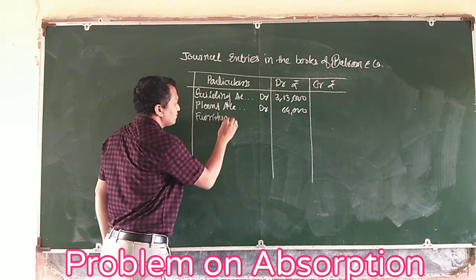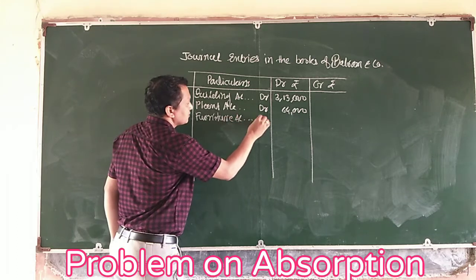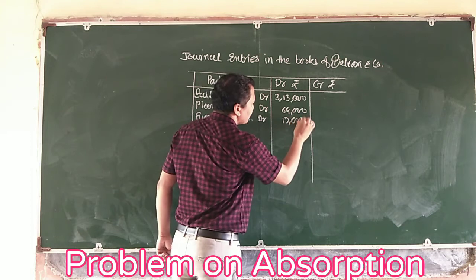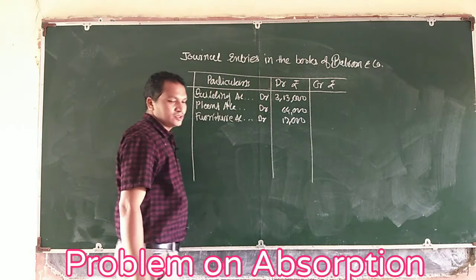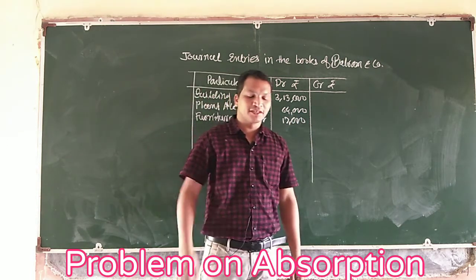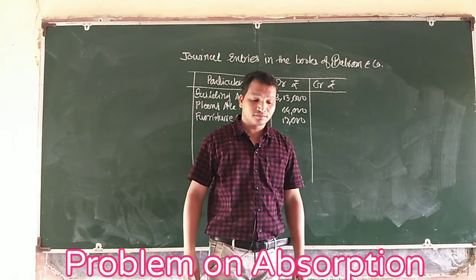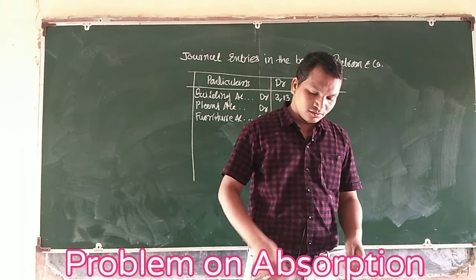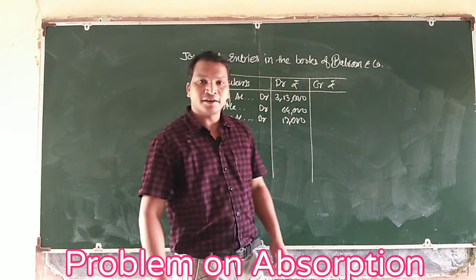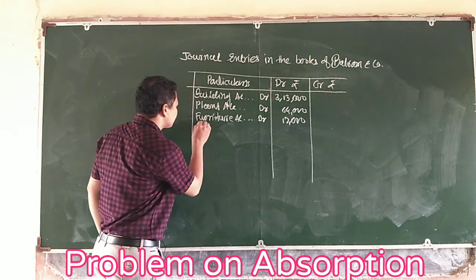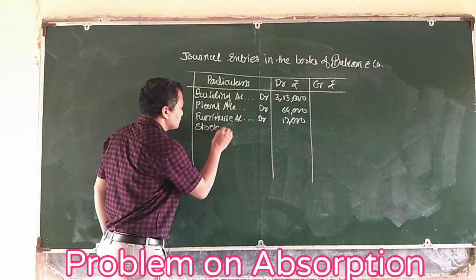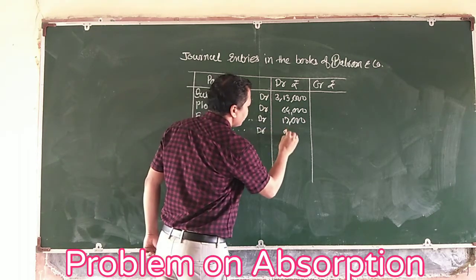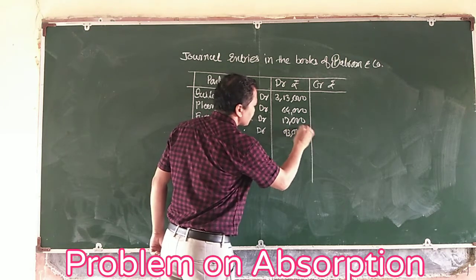Furniture account debit ₹17,000. The next asset is stock. Stock value is ₹39,000. Stock account debit ₹93,000.